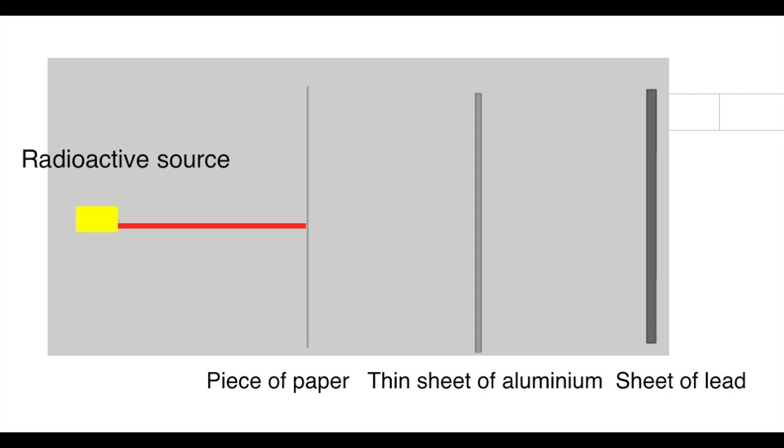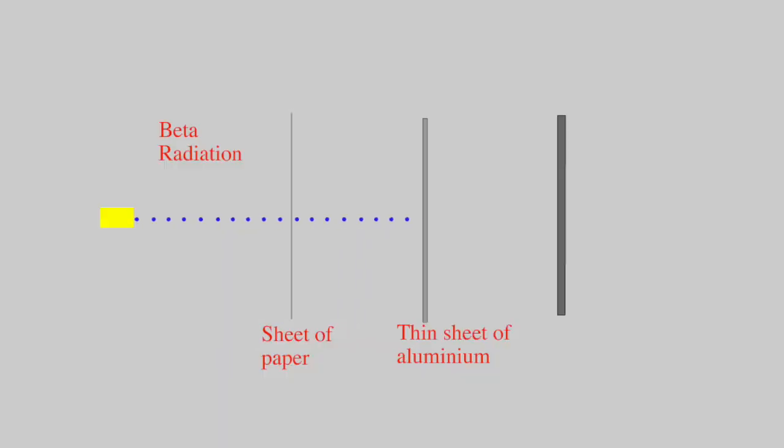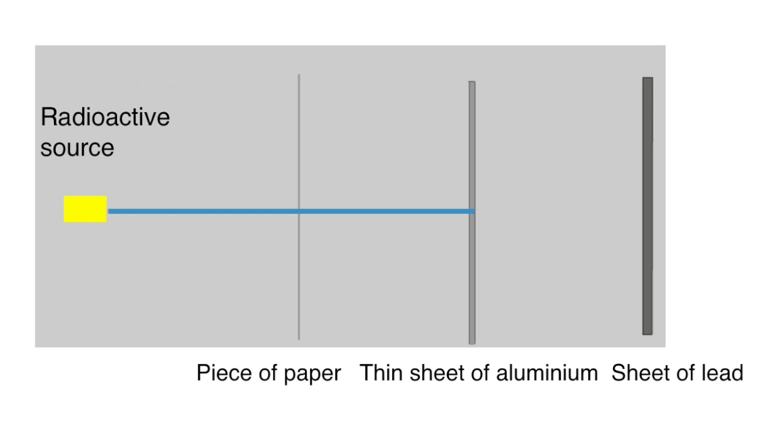Next, beta radiation. It passes comfortably through the piece of paper but is stopped by a thin sheet of aluminum. If there were air in here, the range would be greater than that for alpha, perhaps 30 maybe 40 centimeters.